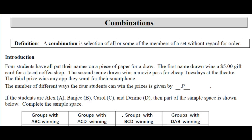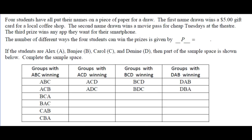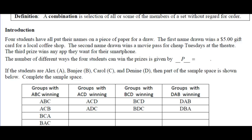Four students put their names in a draw. First name wins a $5 gift card, second wins a movie pass for Cheap Tuesdays, third wins any app they want for their smartphone. The number of different ways the four students can win the prizes: does order matter? Yes — different prizes. So it's 4P4, which is 4 factorial, or 24 ways.